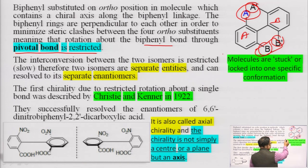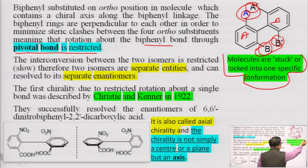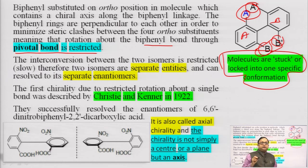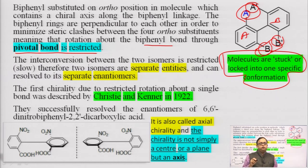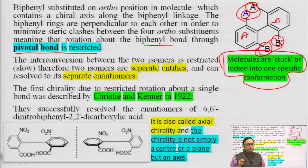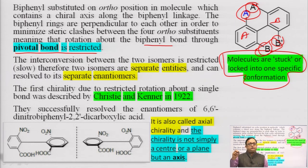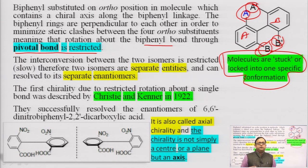Until the molecule was unsubstituted, it was free to rotate. As soon as we introduce substituents at the ortho position, the rotation about the pivotal bond is restricted. The molecule is locked into one specific conformation. This conformation exists as a separate entity and can be resolved into its separate enantiomers. The interconversion between two isomers is restricted or becomes slow, and so the rotamers exist as separate entities.